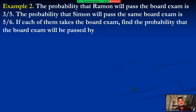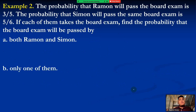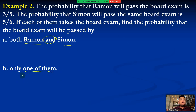For example number 2, the probability that Ramon will pass the board exam is 3/5, and the probability that Simon will pass the same board exam is 5/6. Find: A — the probability that the board exam will be passed by both Ramon and Simon (the word 'and' means independent events), and B — only one of them passes. 'Only one of them' is the same as the word 'or,' so that falls under union of two events.